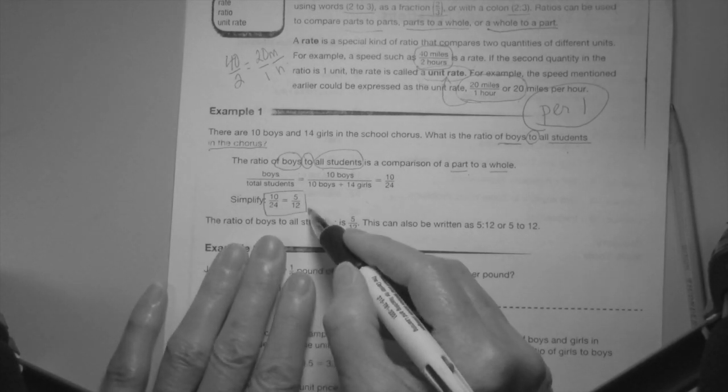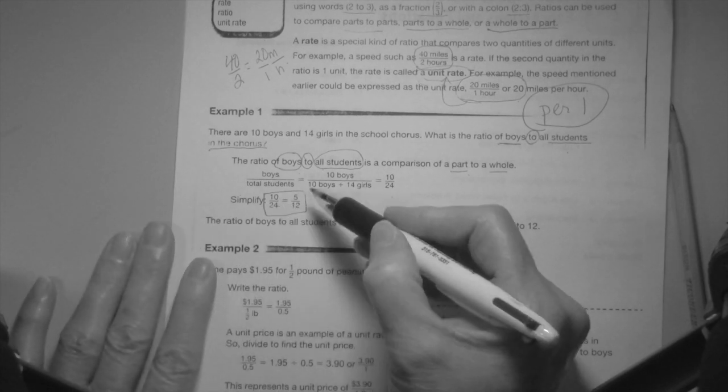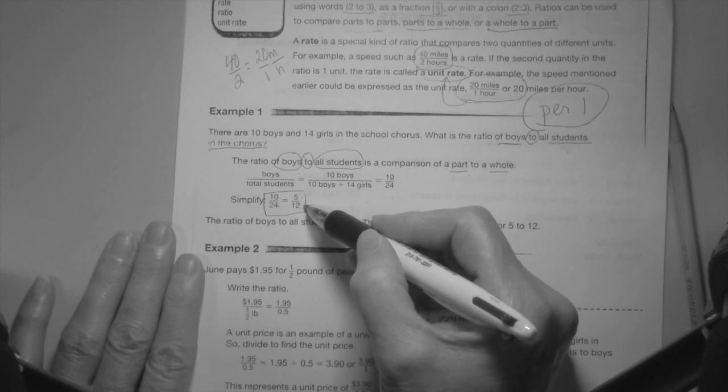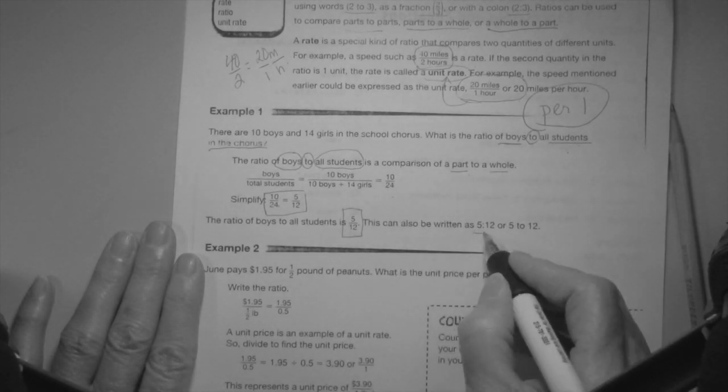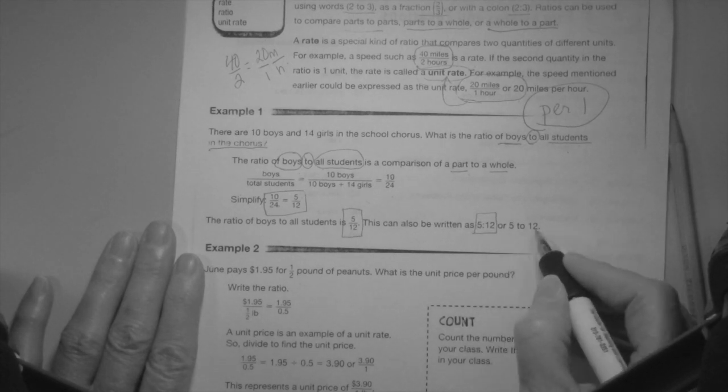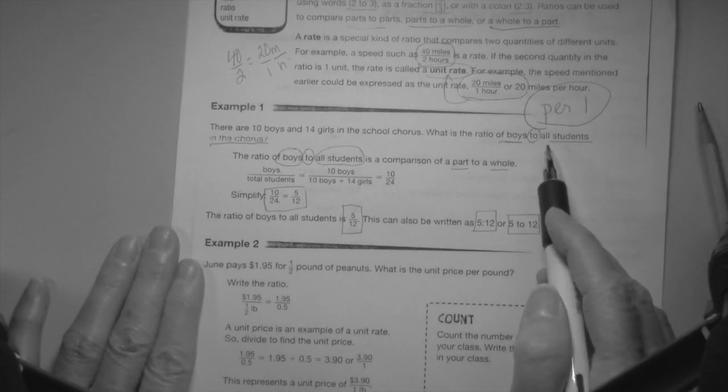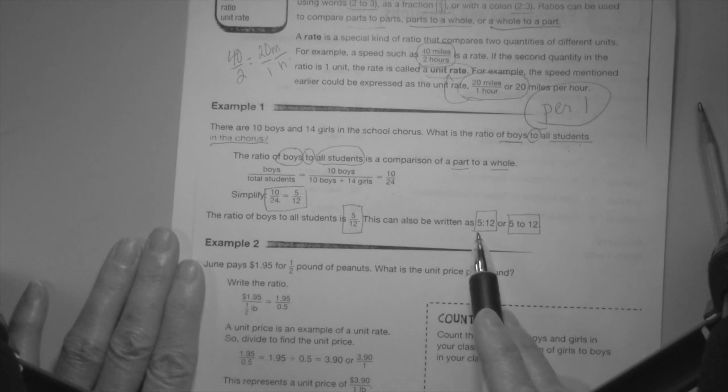Simplify the fraction 10 over 24. The common factor between 10 and 24 is 2. Divide by 2 I get 5, divide by 2 I get 12, so the simplified fraction is 5/12. Can be written as 5 to 12 or 5 to 12. So the ratio of boys to all students is five boys to all 12 students.